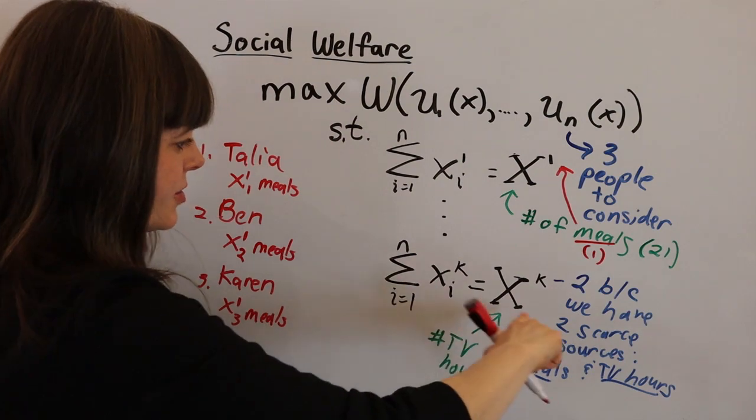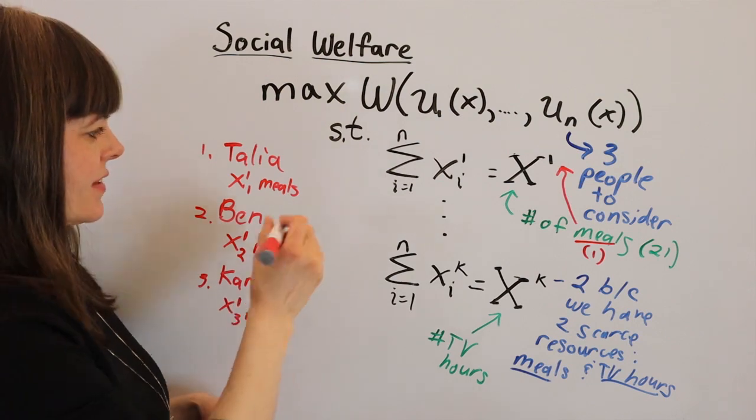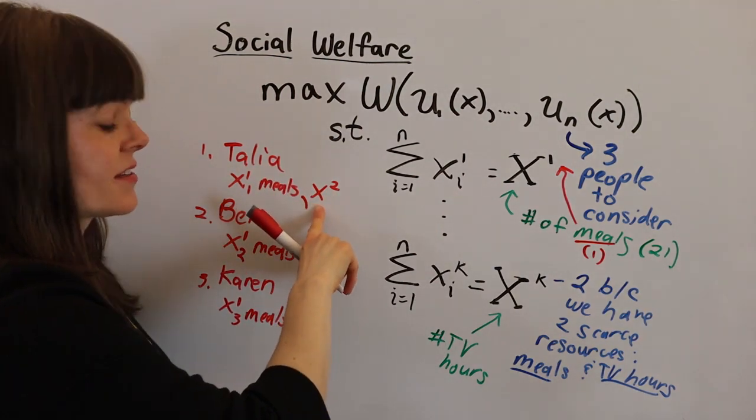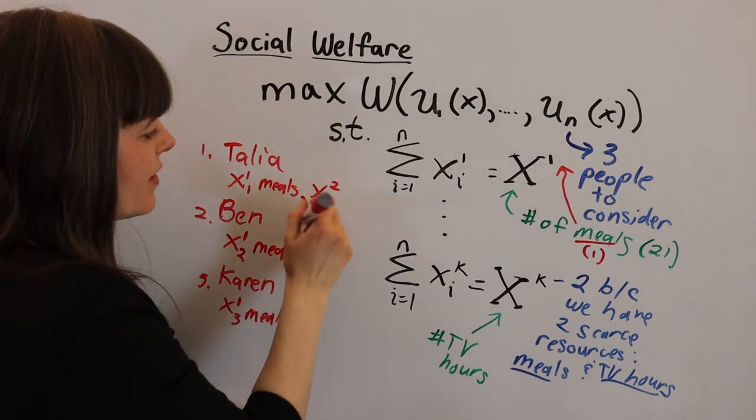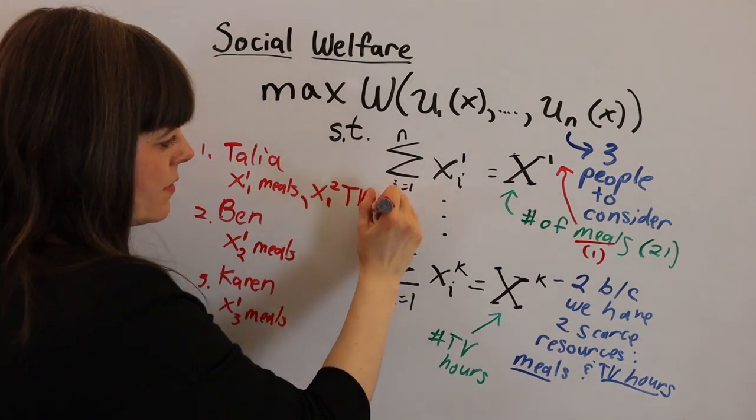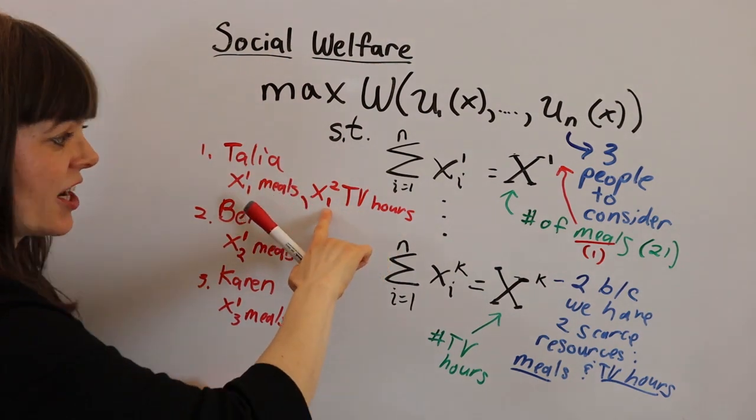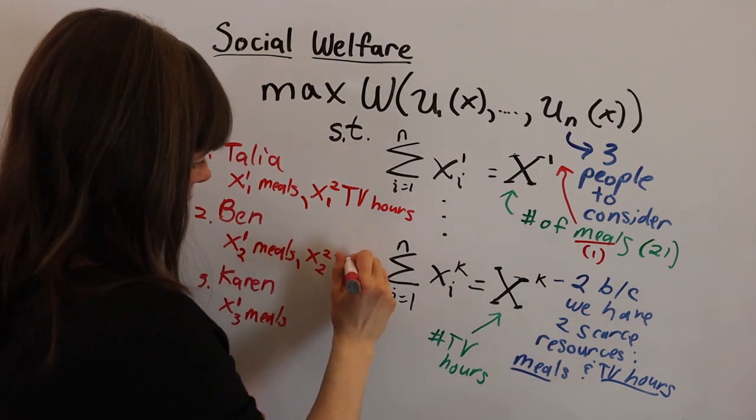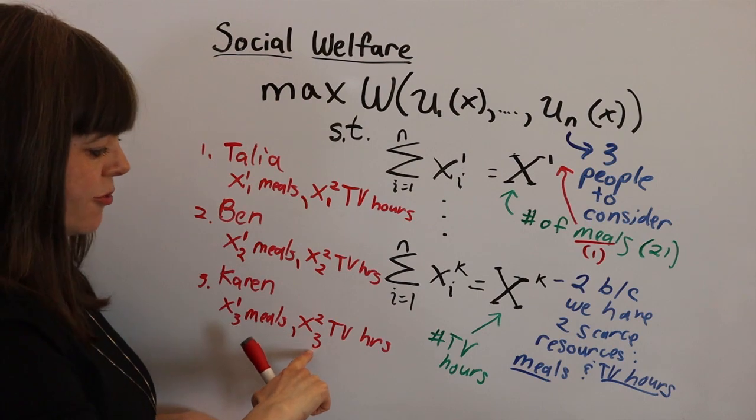And then we also have another constraint here with k. So k is going to be two. What that means is we're going to have x superscript two is representing the fact that this x is not about meals, it's about TV hours. And the subscript is still going to be the person we're referring to. So Talia is person one. And how many TV hours does she get? The two represents we're talking about TV hours. She gets x sub one superscript two TV hours. And let's just change the ticker, the subscript ticker, to get Ben and Karen's number of TV hours. Okay, so we've got Ben's x sub two TV hours and Karen's x sub three TV hours.